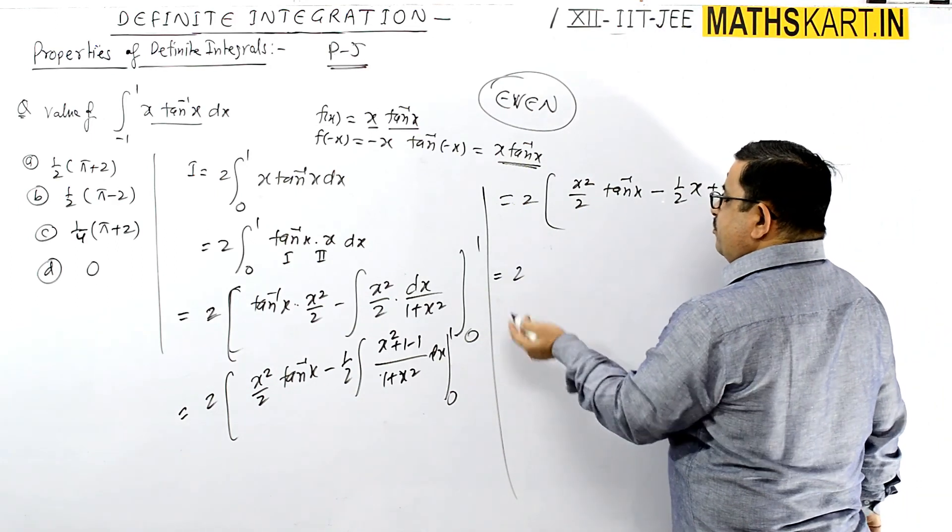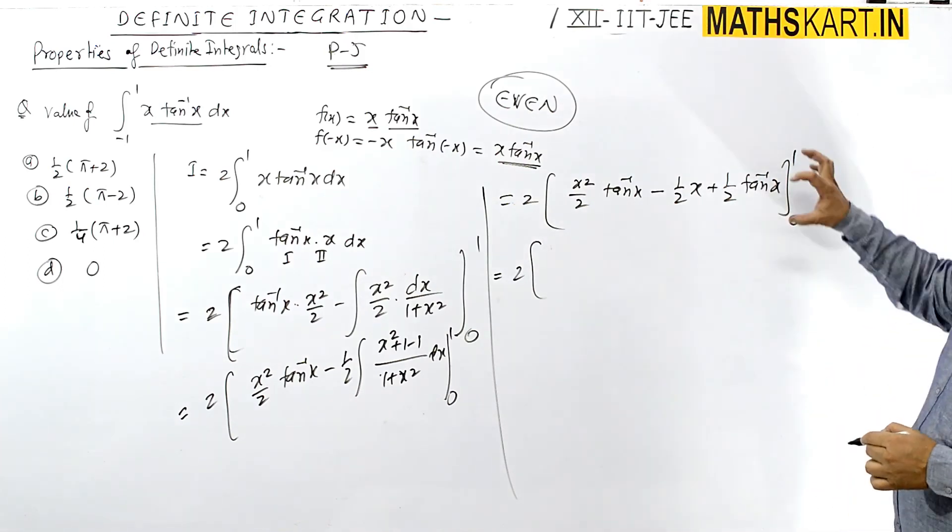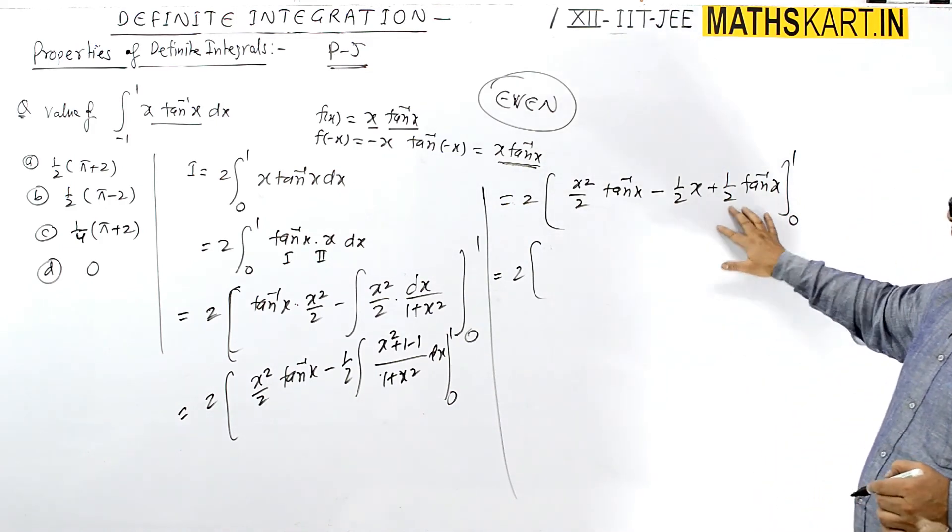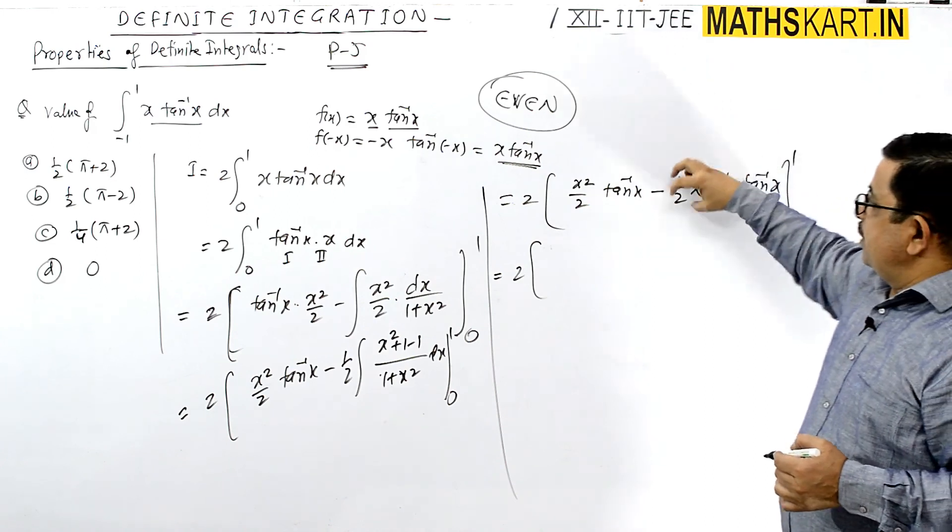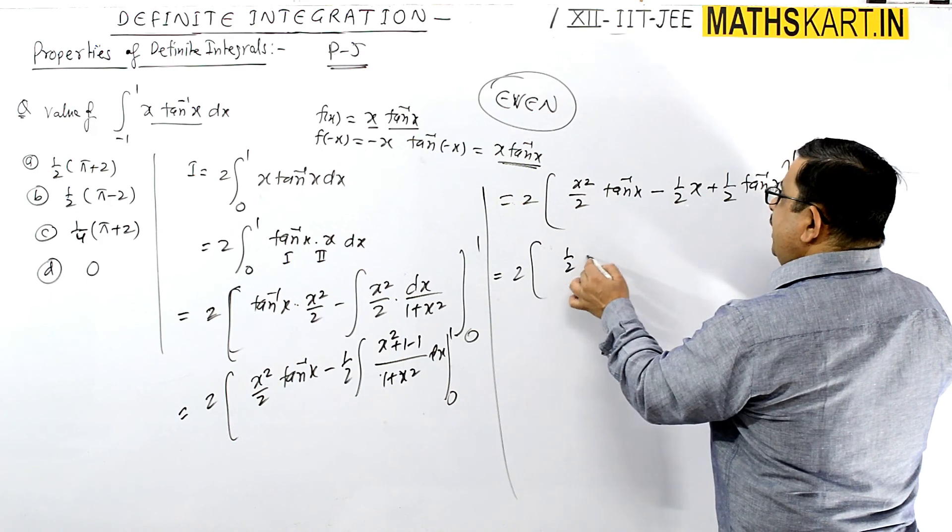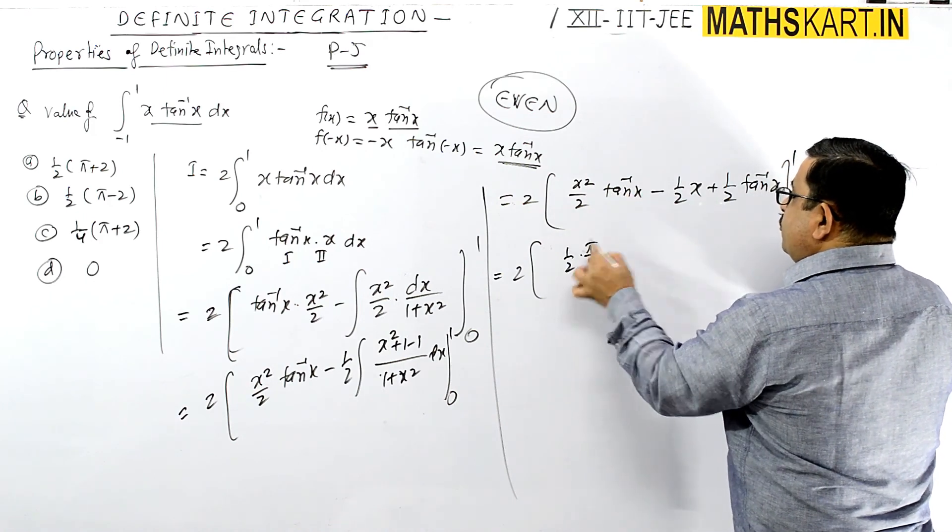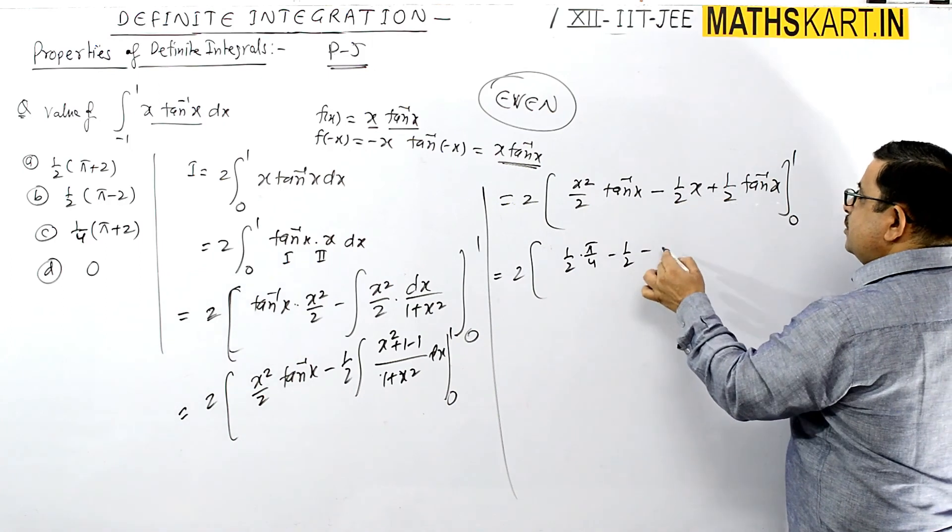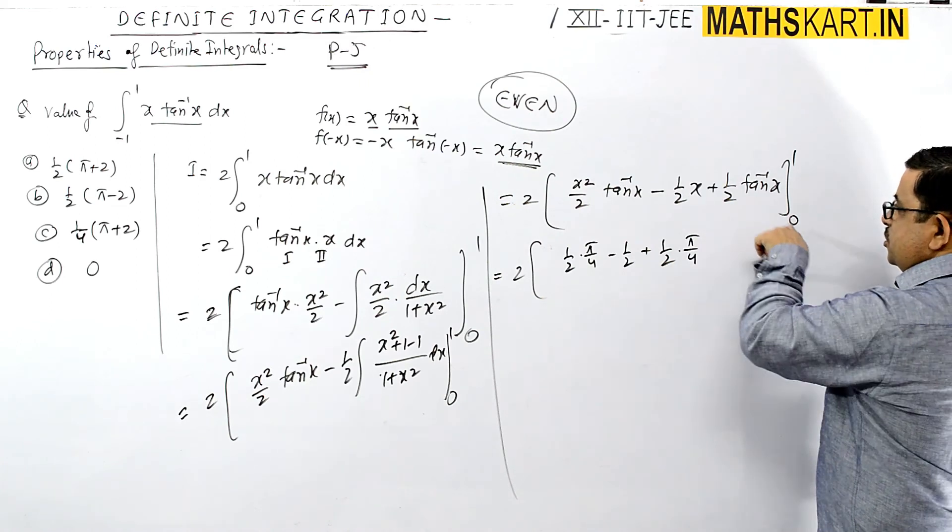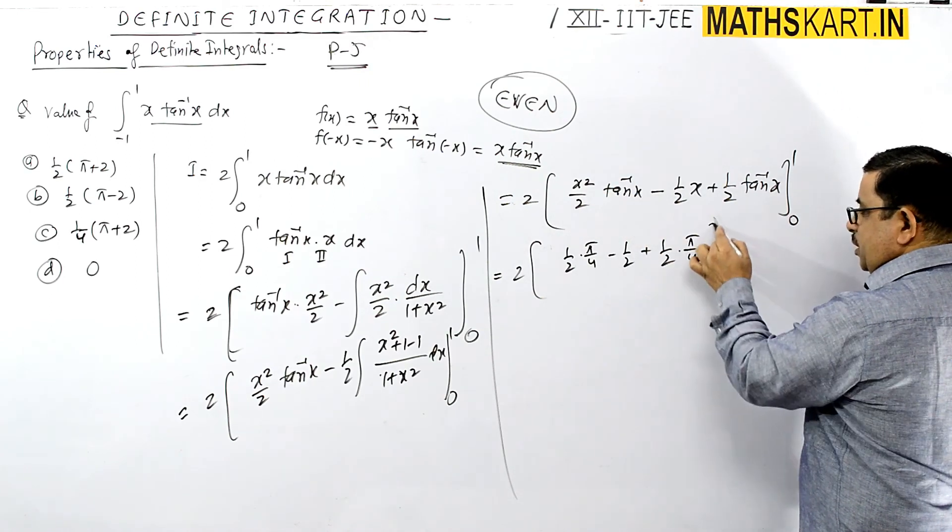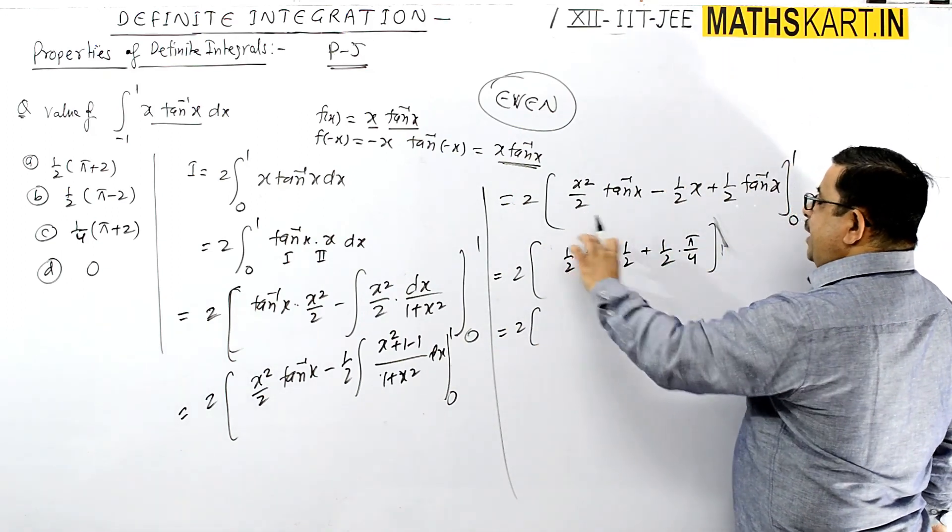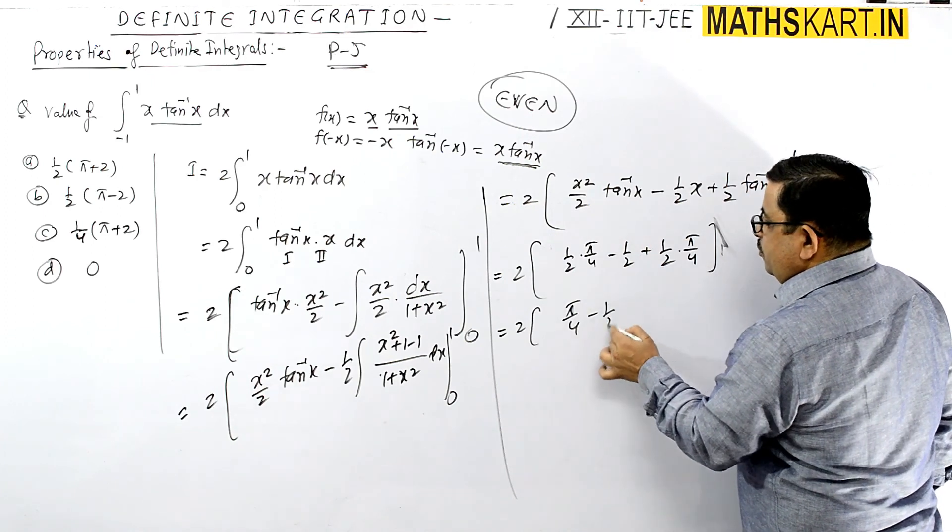Finally, we place the values. At upper limit 1: 1/2 tan inverse 1, which is π/4, minus 1/2(1) plus 1/2 tan inverse 1, which is π/4. This is 2 times: π/8 minus 1/2. π/8 + π/8 is π/4 minus 1/2.